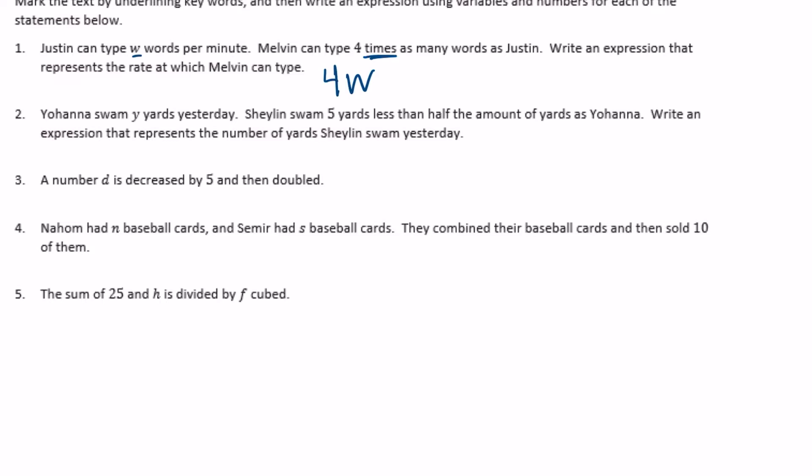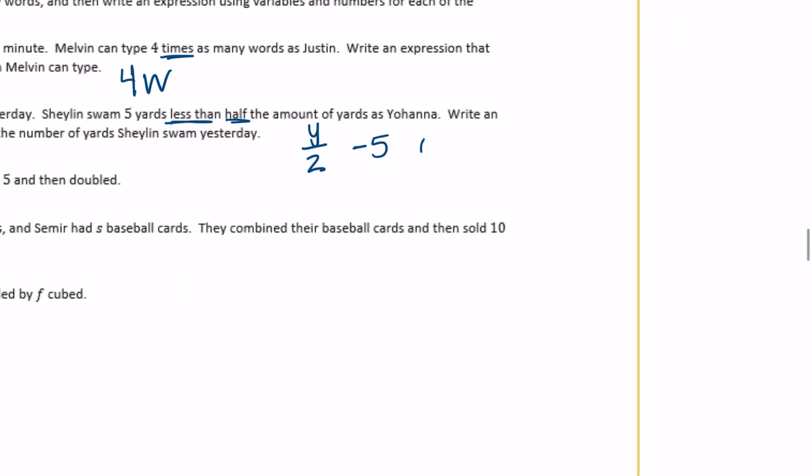Okay, so Shailen swam 5 yards less than, so subtracting, half the amount of yards as Johanna. So Johanna is Y. So Shailen swam 5 yards less than, so at the end we're going to subtract 5, half the yards as Johanna. So I'm going to do half of Y or Y over 2. So Y over 2 minus 5. Or if you want to do it a different way, you can do Y divided by 2 minus 5. You can write it like that as well.